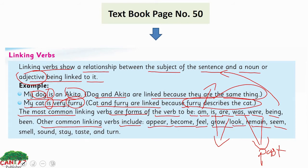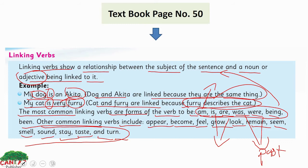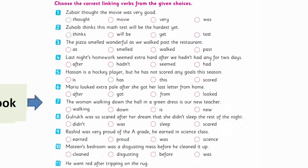Other common linking verbs include: appear, become, feel, grow, look, remain, seem, smell, sound, stay, taste, and turn. But remember, dear students: if a sentence does not have am, is, are, was, were, being, or been, then these other verbs can act like a linking verb in that sentence. However, if we do have am, is, was, were, being, or been, they act as the linking verb.